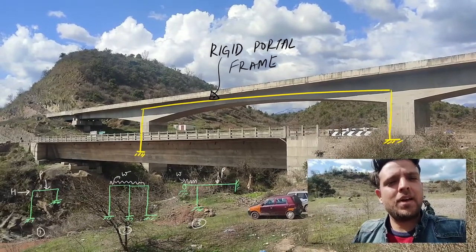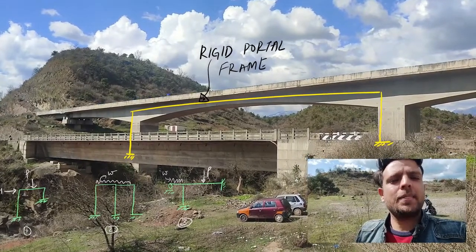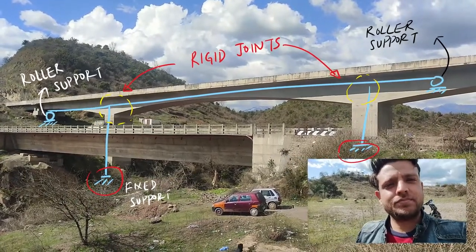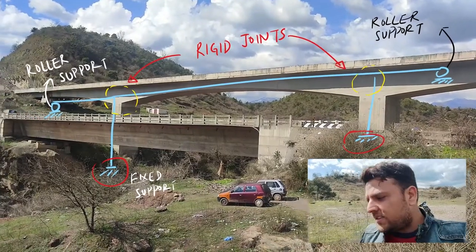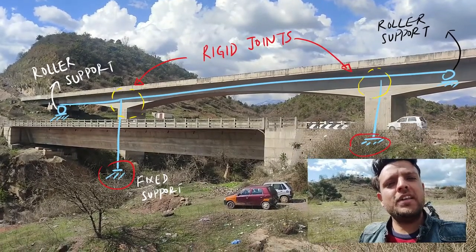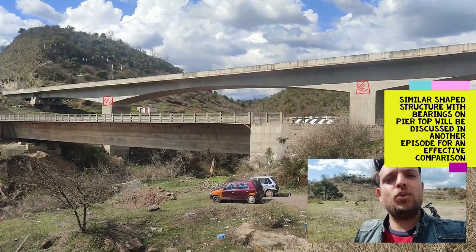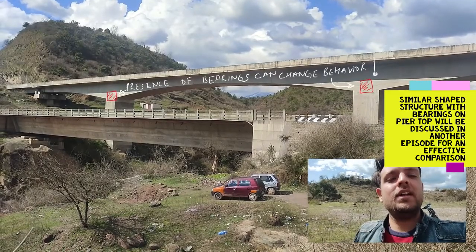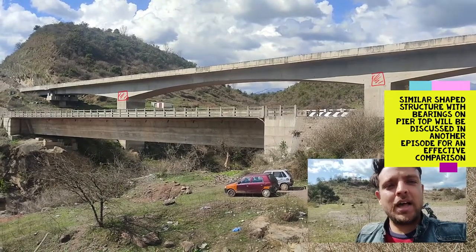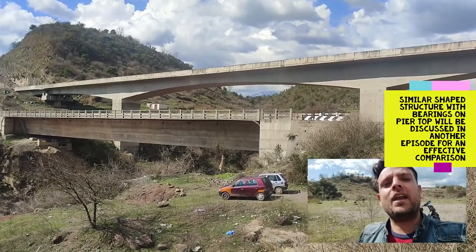The largest span — the middle span — is actually a rigid portal frame, the kind we come across in structural analysis textbooks, primarily in indeterminate analysis through various structural numericals, as depicted in this line sketch. This bridge is a practical application of the same. For the structure to behave as 100% continuous, there should have been two bearings — one on each pier in the longitudinal direction. I have another structure in mind where a similar shape exists, but the substructure and superstructure are isolated by bearings on top of the pier cap, and I will upload that episode soon.